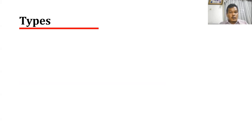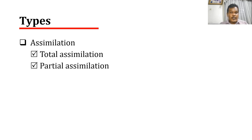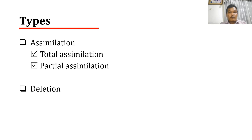There are two types of morphological processes. The first one is assimilation, and the second one is deletion. In assimilation, we focus on substitution, while in deletion, we focus on elimination.